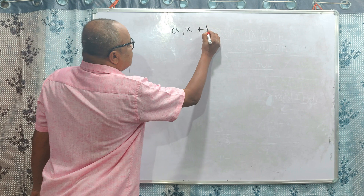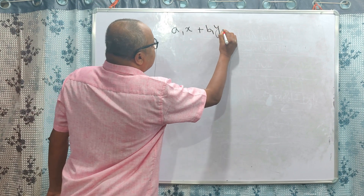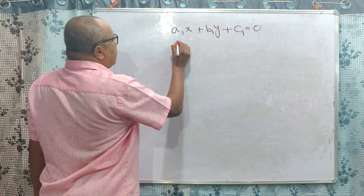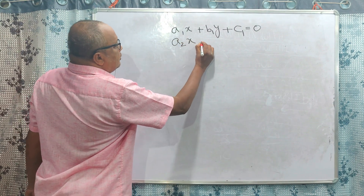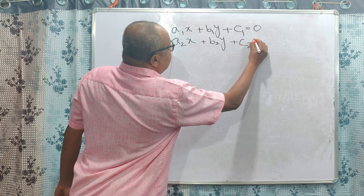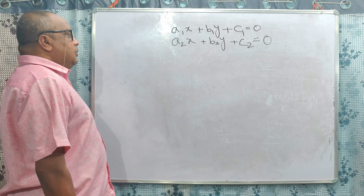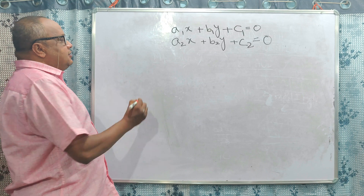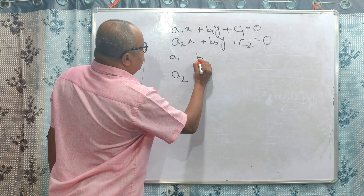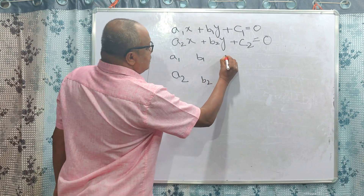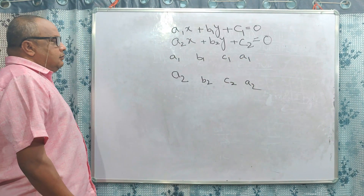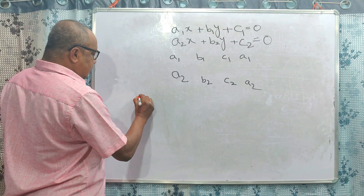A1x plus B1y plus C1 is equal to zero. A2x plus B2y plus C2 is equal to zero. This problem can be solved by a simple method. Write A1, A2, B1, B2, C1, C2, and then write again A1, A2. Now we have the following solution.